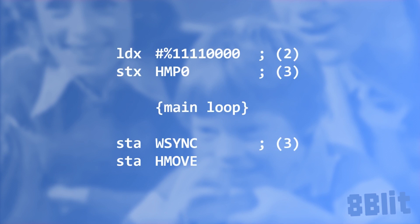Taking a look at the third example for this episode, we're first setting the X register with all four of the high bits set, which will move the graphic by one color clock to the right. Then down on our main loop, we strobe the Horizontal Move register right after the WSync. Doing this, we're strobing Horizontal Move on every frame, moving the graphic by one color clock each time. What we observe is that the TIA remembers where the player graphic was last positioned and then applies the adjustment to that position, moving the graphic across the screen in a smooth scroll, one pixel at a time — taking only three machine cycles per frame.